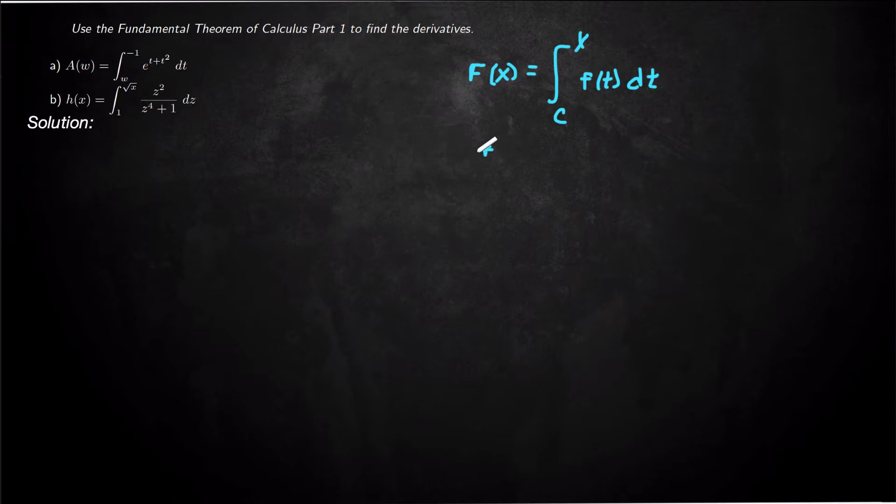So the fundamental theorem of calculus part 1 says this derivative, F prime, is just going to be little f, the function inside, evaluated at x. So that's the fundamental theorem of calculus part 1 for finding derivatives.